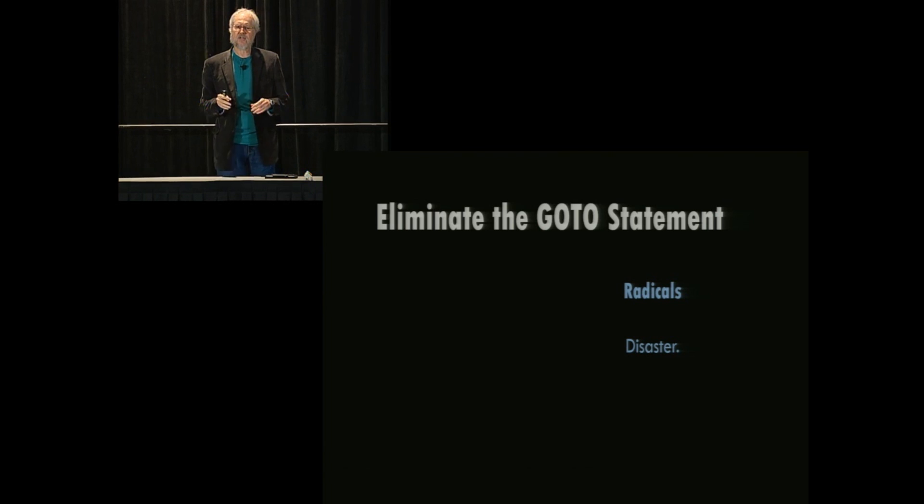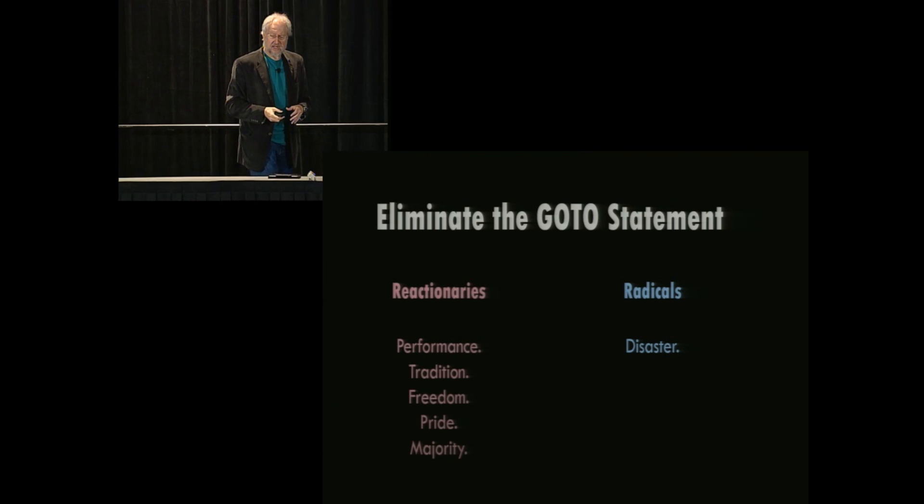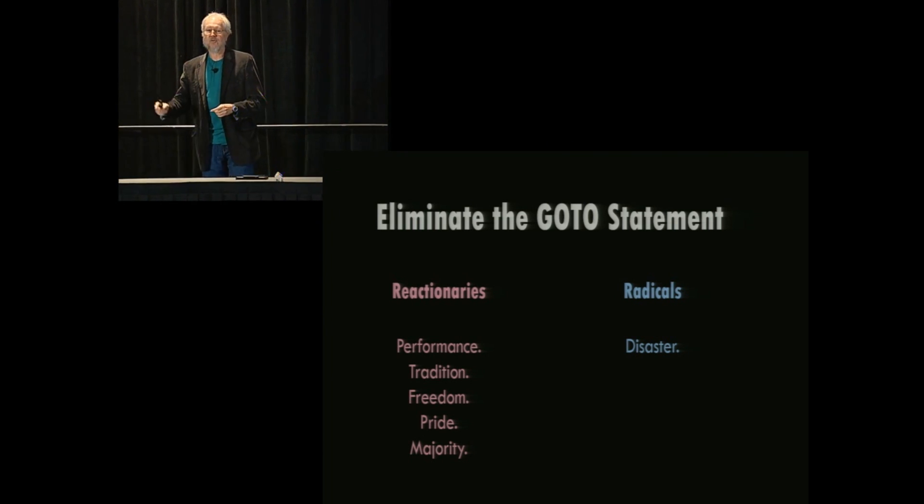And there is some good evidence to support that. You know, if the fewer go-to statements you have, the better the program seems to be, let's just drive the number of go-to statements to zero and make things the best they are, and that way we'll avoid disaster. Else and while were just appearing in programming languages around that time, and it was observed that if you have else and while, that eliminates most of the need for go-tos. Then you had the reactionaries who said, but it doesn't eliminate all the needs for go-to, and we need some of those uses.